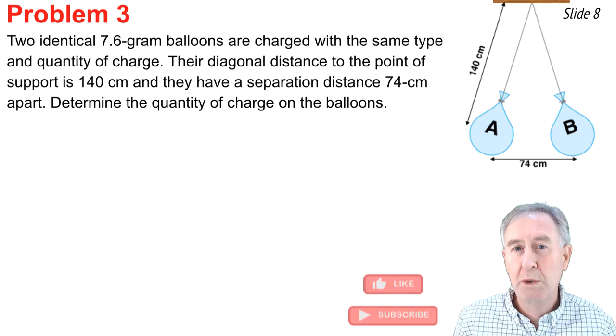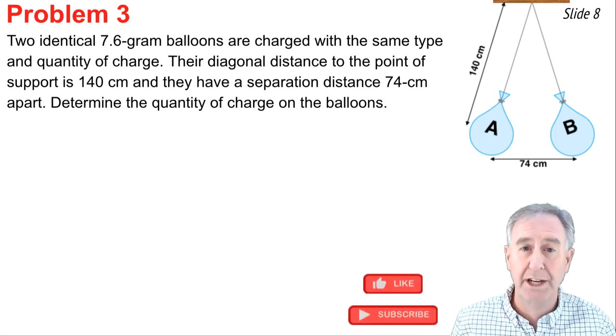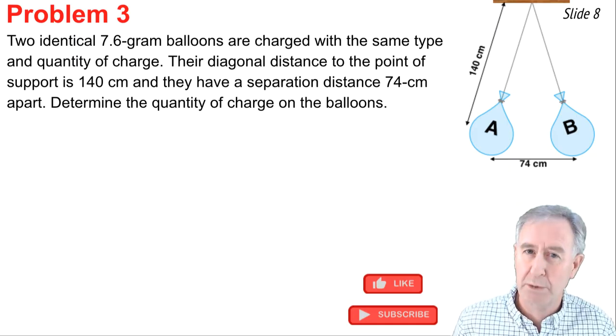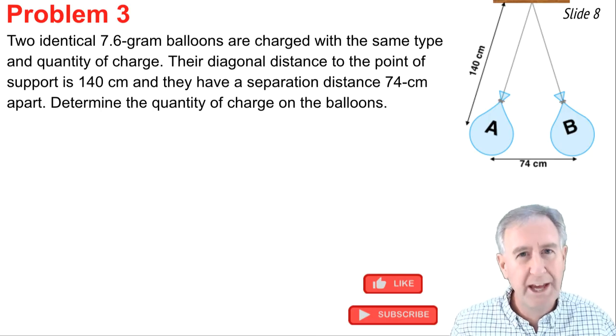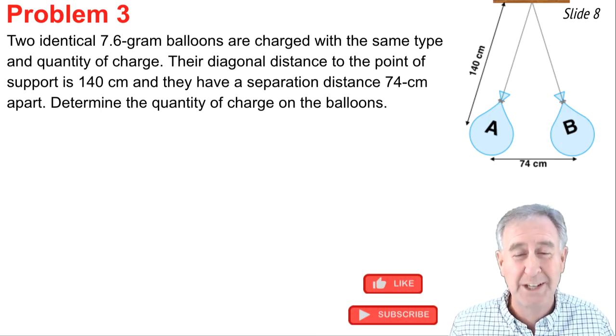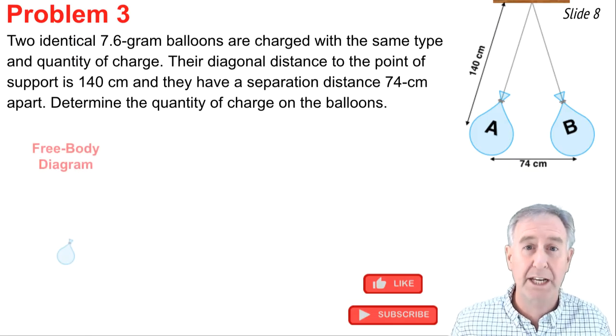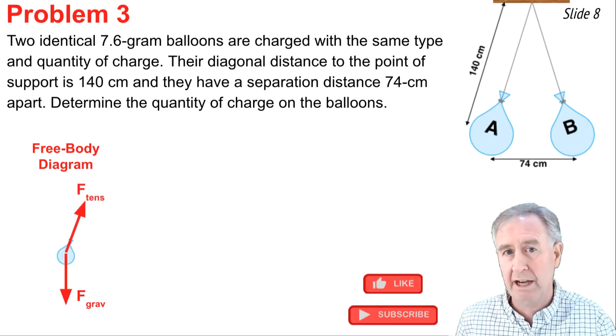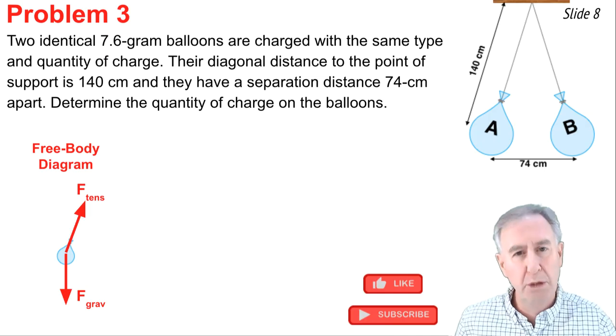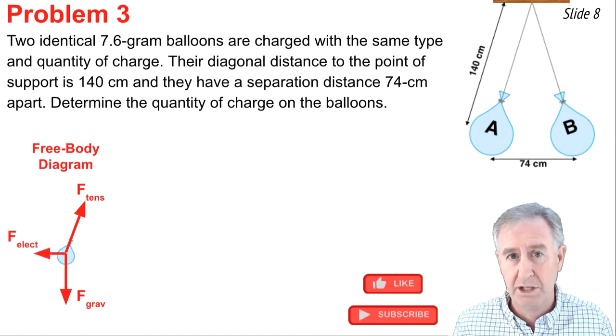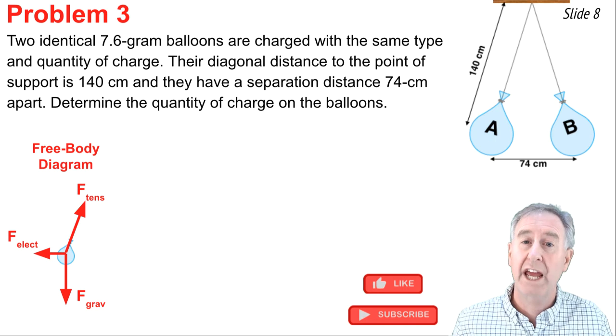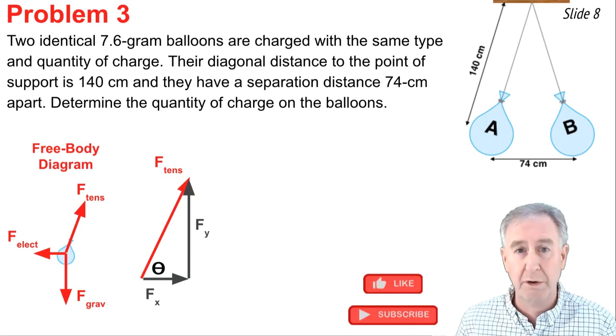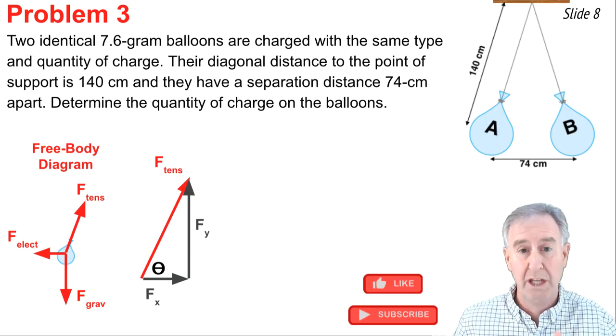In problem 3 we have two identical balloons of no mass that are hanging by strings. They're 74 centimeters apart and the distance diagonally from the center of the balloon to where it's supported above is 140 centimeters. We have to determine the quantity of charge on the two balloons. So I begin with a force diagram or a free body diagram for my balloons. And I draw the F grav down. I know there's a tension force up and to the left on the balloon A. And then balloon B is pushing balloon A to the left. So I draw the electrical force. Now whenever I have forces that are at angles to the axes I resolve them into X and Y components. So I'm going to draw that triangle right there. And the Y component is shown and the X component is shown.